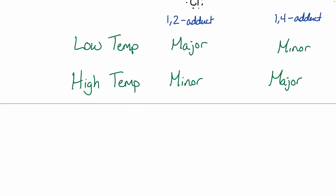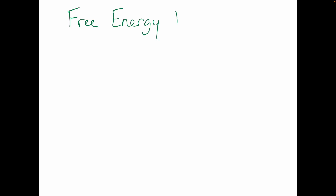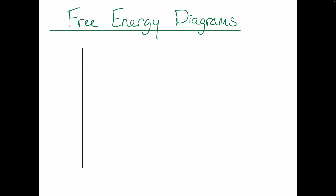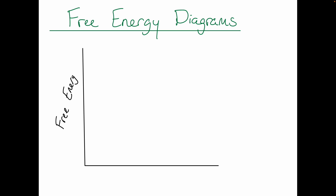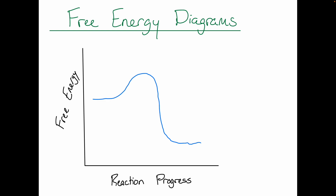To explain this temperature dependence, we need to discuss free energy diagrams. These graphs have free energy on the y-axis and reaction progress (reaction coordinates) on the x-axis, with a curvy line showing the reaction pathway. There are two important pieces of information depending on which region of the diagram we look at.